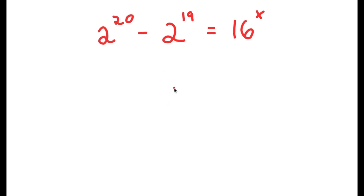So in this problem, I have 2 to the power of 20 minus 2 to the power of 19 is equal to 16 to the power of x.